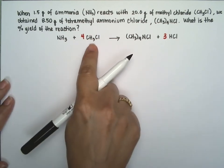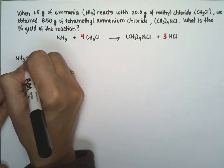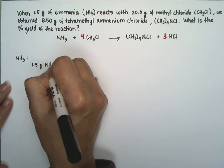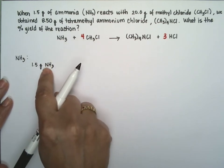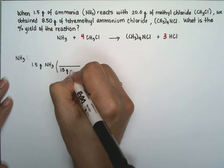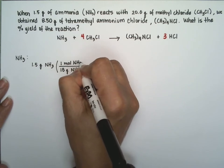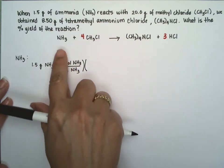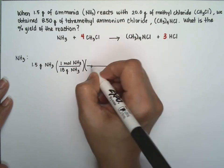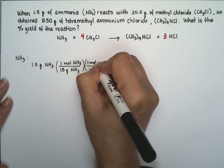Is ammonia the limiting reagent, or is methyl chloride? Let's assume it's ammonia and see what we get. We have 1.5 grams of ammonia. Nitrogen is 14 plus 3 hydrogens gives us 17 — so 17 grams per mole. According to the reaction, 1 mole of ammonia produces 1 mole of tetramethyl ammonium chloride.